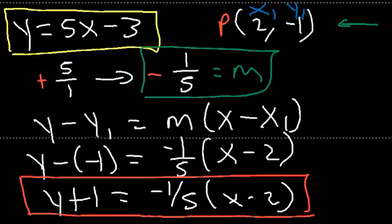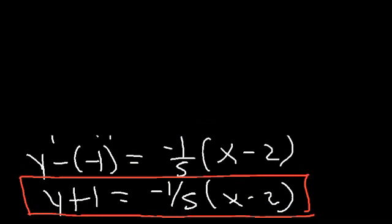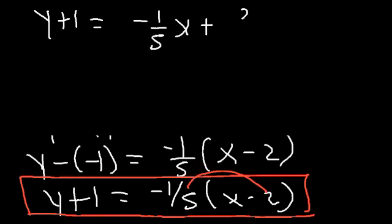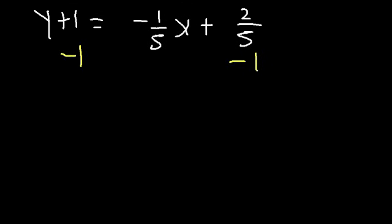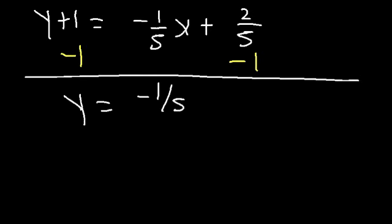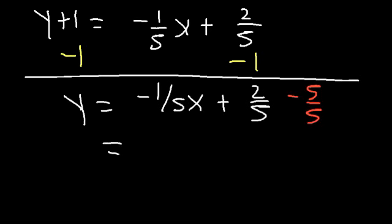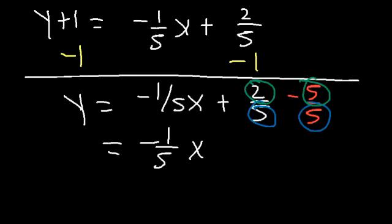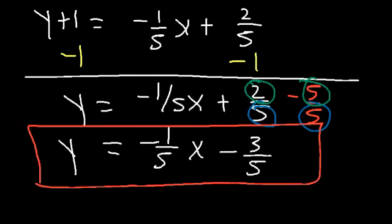Now let's get the answer in slope-intercept form. Distribute the negative 1 over 5: y plus 1 equals negative 1 over 5 x, and negative 1 fifth times negative 2 is positive 2 over 5. Subtract both sides by 1: on the left we have y, and on the right negative 1 fifth x plus 2 over 5. Converting negative 1 to negative 5 over 5 for common denominators: 2 over 5 minus 5 over 5 gives negative 3 over 5. So the equation in slope-intercept form is y equals negative 1 fifth x minus 3 over 5.